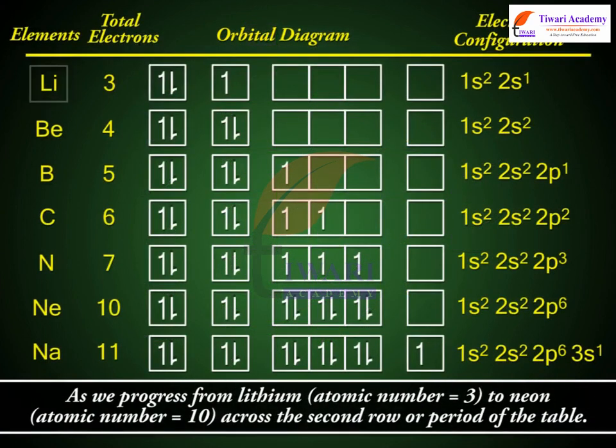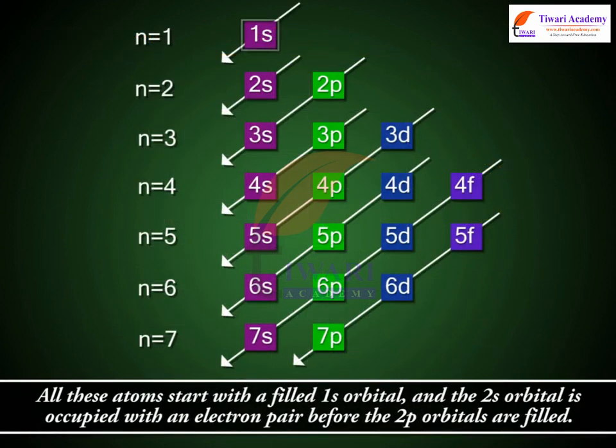As we progress from lithium, atomic number is equal to 3, to neon, atomic number is equal to 10, across the second row or period of the table, all these atoms start with a filled 1s orbital and the 2s orbital is occupied with an electron pair before the 2p orbitals are filled.